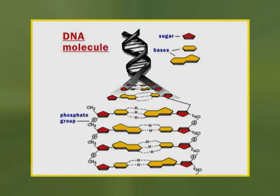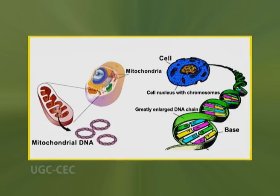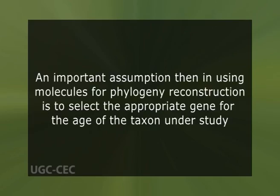By counting differences in the sequence of units that make up protein and DNA molecules, researchers have devised a tool for measuring the degree to which different species have diverged since evolving from a common ancestor. Because mitochondrial DNA has very high mutation rates compared with nuclear DNA, it has been useful for establishing relationships among groups that have diverged recently. An important assumption in using molecules for phylogeny reconstruction is to select the appropriate gene for the age of the taxon under study.